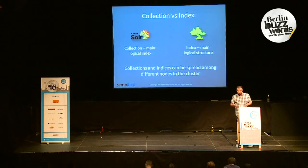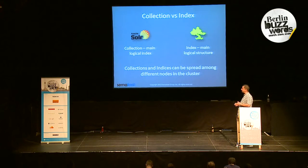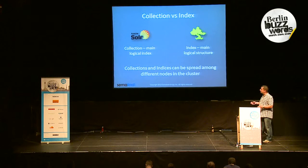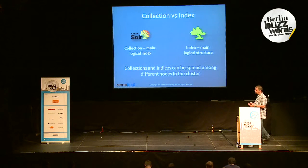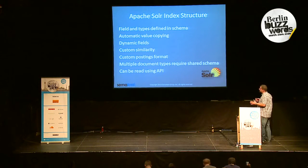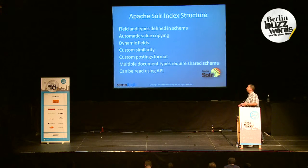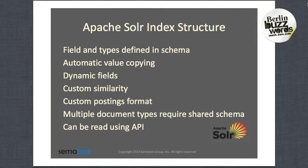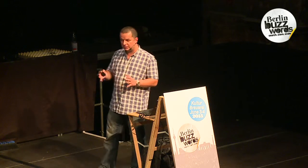Of course, we are all here because we're interested in the technical details. The basics: the collection and index. Collection in SolrCloud is the main logical index that can be spread among multiple nodes in the cluster. In case of Elasticsearch, the main structure is called an index. In Apache Solr, the index structure can be defined in the schema XML file. It allows us to automatically copy values, to have dynamic fields, to use the custom similarities introduced in Lucene 4.0, and the custom postings format. Multiple documents need to share the same schema in a single index.